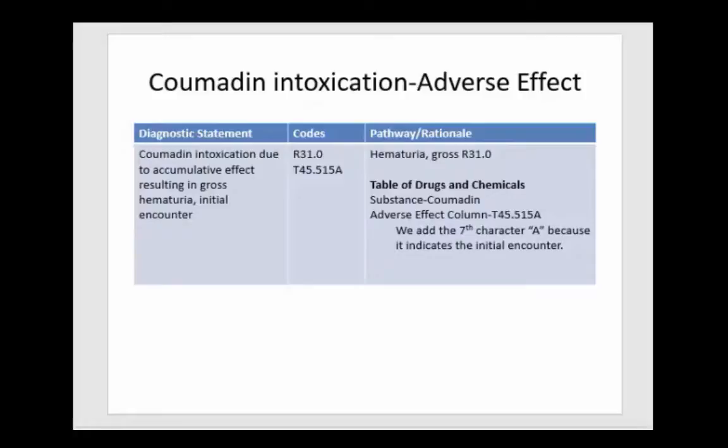Here's an example: Coumadin intoxication due to a cumulative effect resulting in gross hematuria, initial encounter. We're going to code the gross hematuria first — that's the nature of the adverse effect — and then by going to the table of drugs and chemicals and looking up Coumadin in the adverse effect column, we get T45.515, adding the seventh character A because this is an initial encounter.